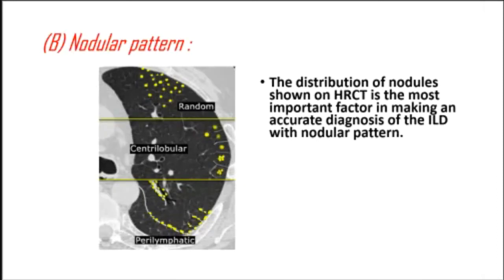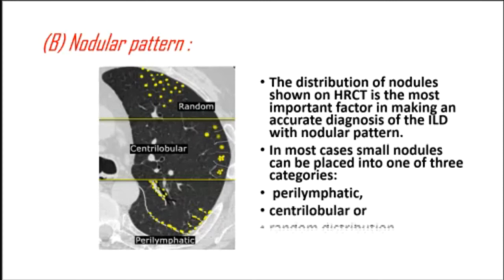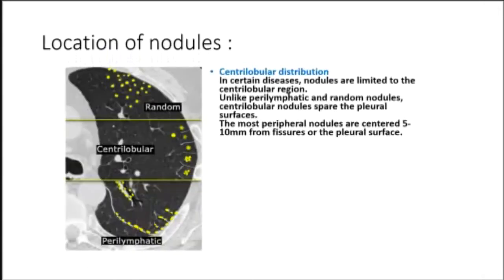The distribution of nodules shown on HRCT is the most important factor in making an accurate diagnosis of ILD with a nodular pattern. In most cases, small nodules can be placed into one of three categories: perilymphatic, centrilobular, or random distribution. In centrilobular distribution, nodules are limited to the centrilobular region and, unlike perilymphatic and random nodules, they spare the pleural surfaces.